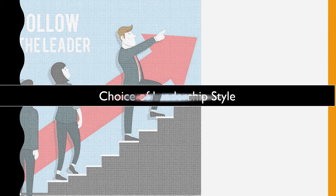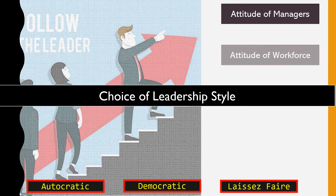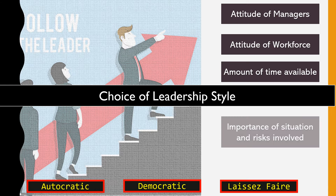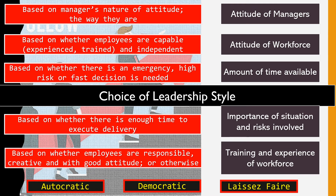Now let's look at the choice of leadership style and when to use autocratic, democratic, or laissez-faire. The choice depends on five factors: the attitude of the managers, the attitude of the workforce, the amount of time available, the importance of the situation and risks involved, and the training and experience of the workforce. On the slide, the descriptions for each factor are jumbled up — take a moment to match the correct description to each factor before we check the answers.